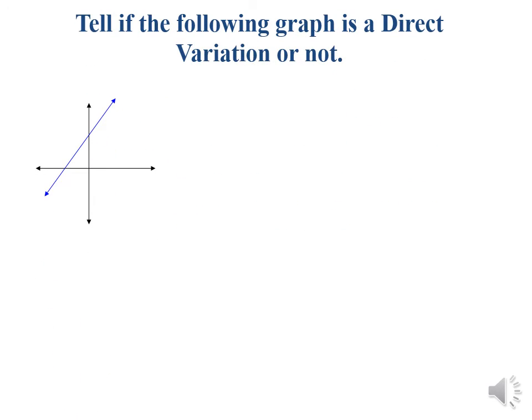Tell me if the following graphs represent a direct variation or not. First graph: it is a straight line, a linear relation, but the line does not pass through the origin point, so this is not a direct variation. Second graph: the straight line passes through the origin point, so this is a direct variation. Third graph: the straight line does not pass through the origin point, so not a direct variation. The fourth is not a straight line at all, so also not a direct variation.